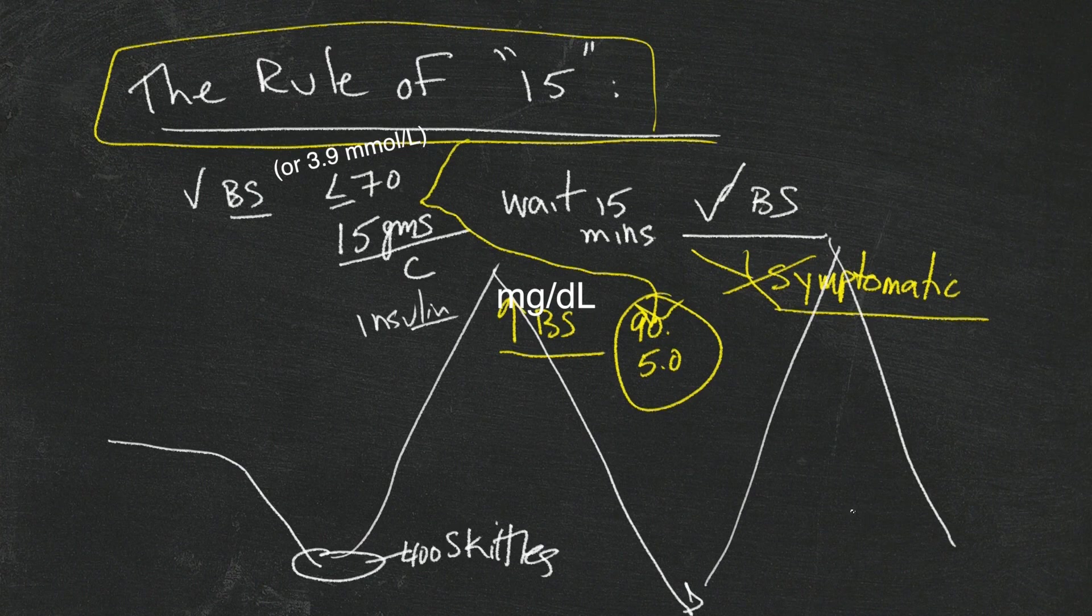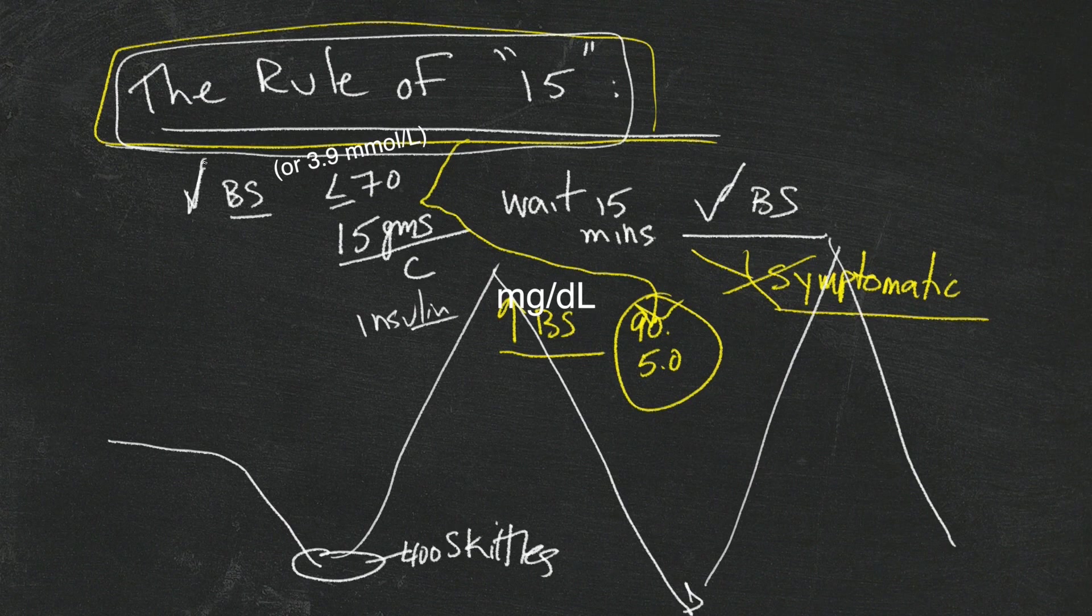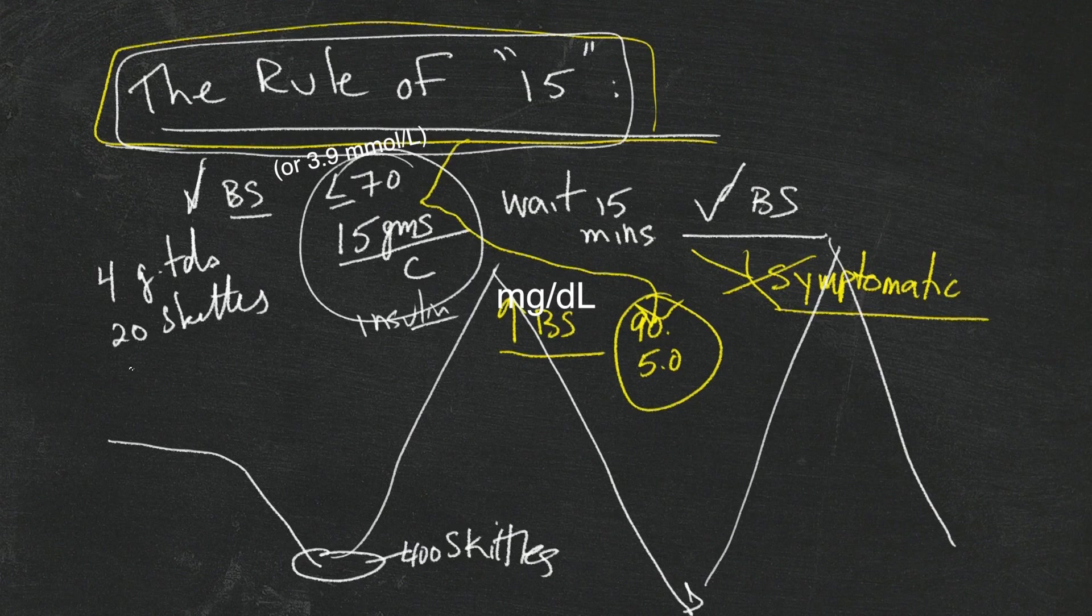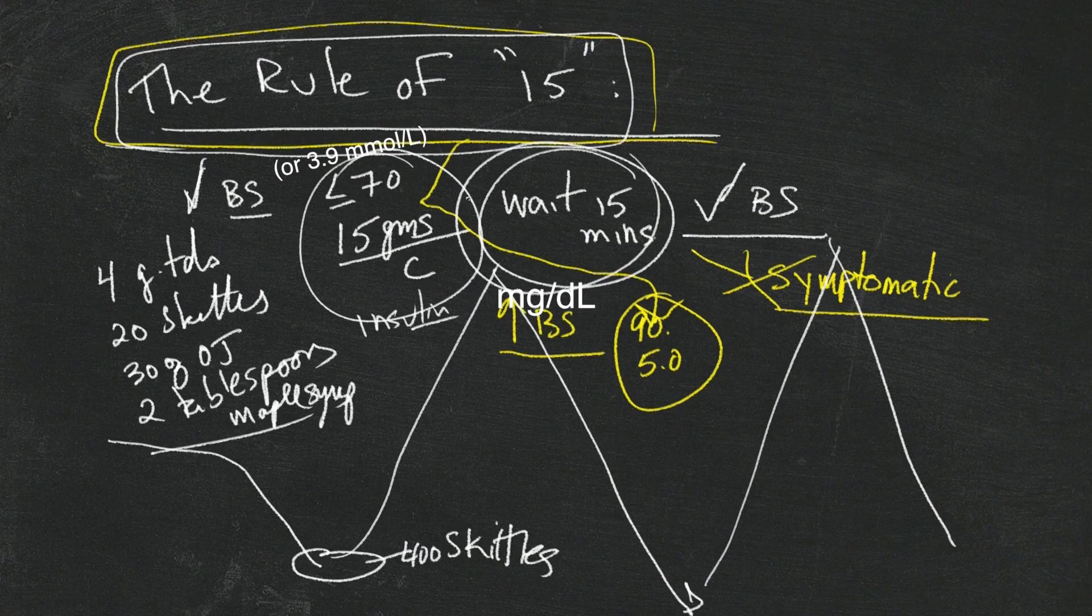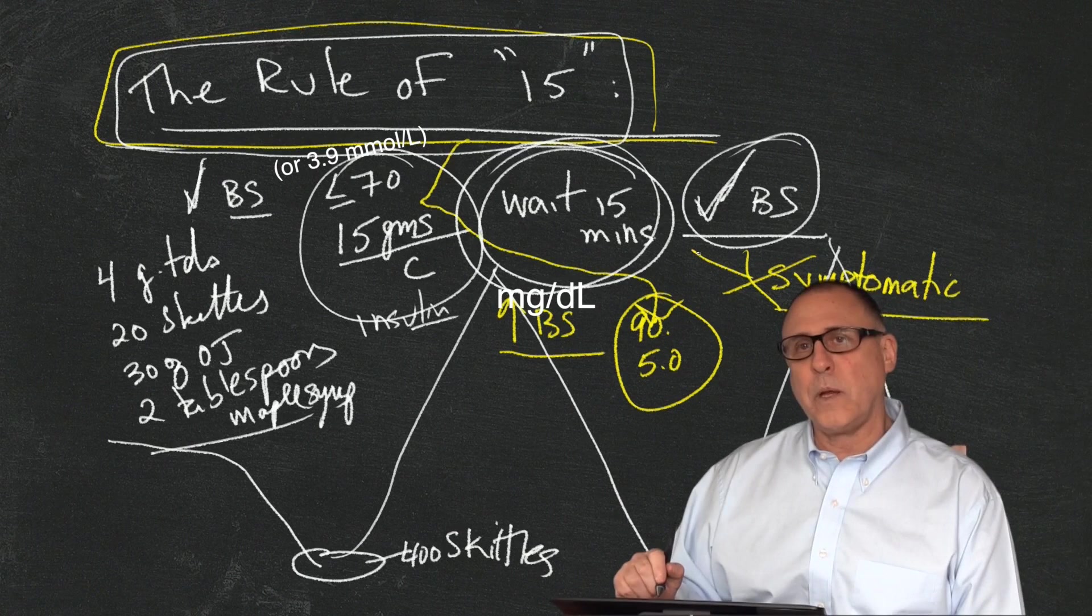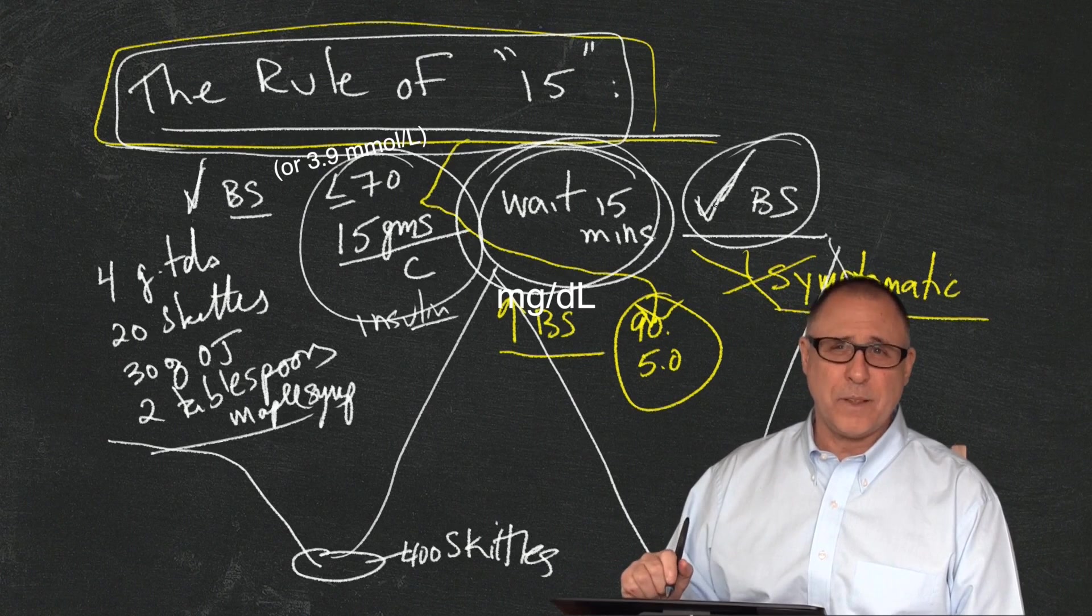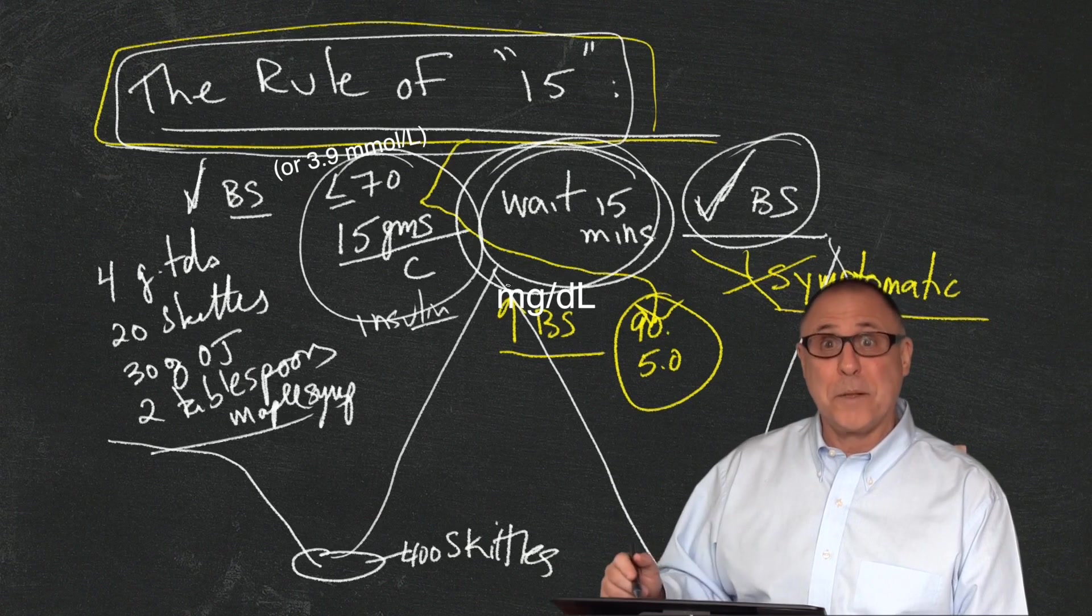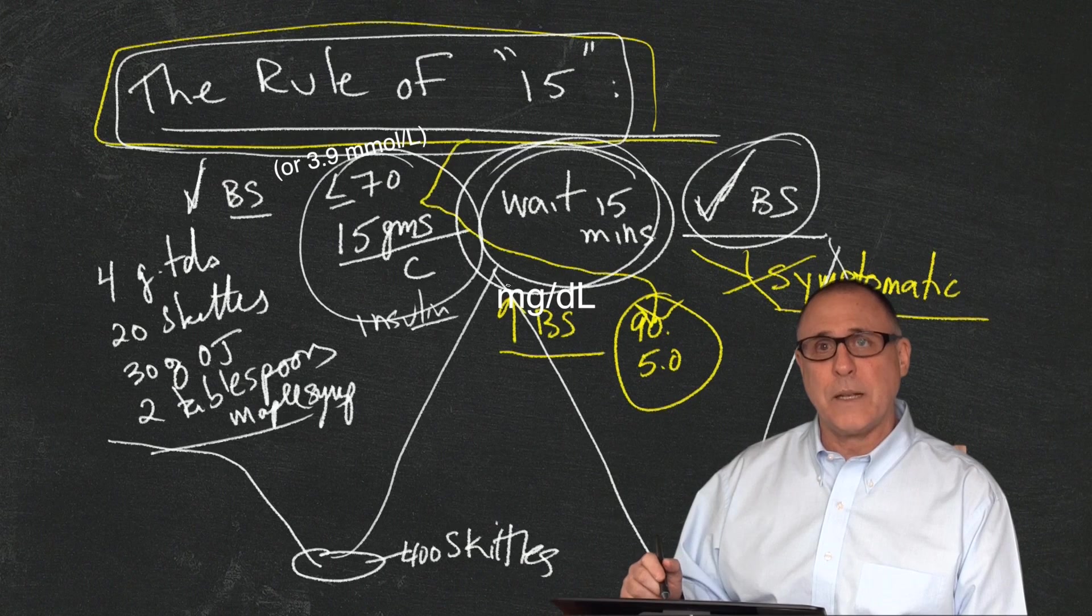You get my point. There's a certain amount which the rule of 15 sort of outlines for us. Check your blood sugar to make sure you're low, take 15 grams of carbohydrate which is about four glucose tablets, 20 Skittles, 30 ounces of juice, two tablespoons of maple syrup. Wait 15 minutes - don't keep on stuffing your face - and then in 15 minutes check again to see where you are. If you manage it this way, your overall management will be a lot smoother. And like I said, I'm not trying to come off as holier than now, but the bottom line is that all of us fall into a thing where we just would kill for a jelly bean and we just keep on overdoing it. But what we want to make sure about is that we're checking, checking, checking, and that we're not overdoing it to the best of our ability.